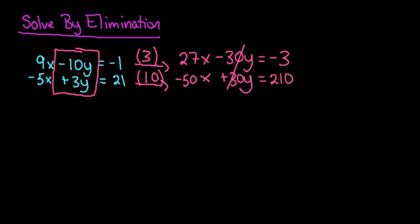So now we would simply add these two equations together. And when I do that, negative 50 minus 27 gives me negative 23x. And because the 50 is bigger, I do have to keep the sign of that, so I end up with negative 23x. 210 minus 3 gives me positive 207.